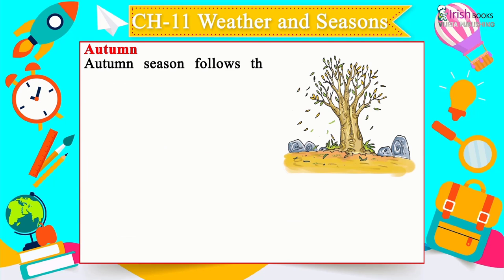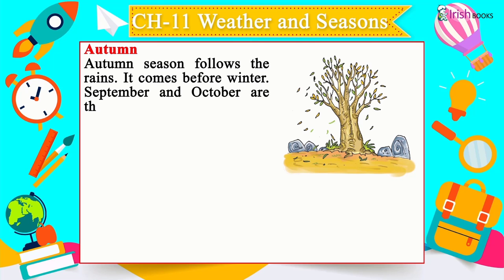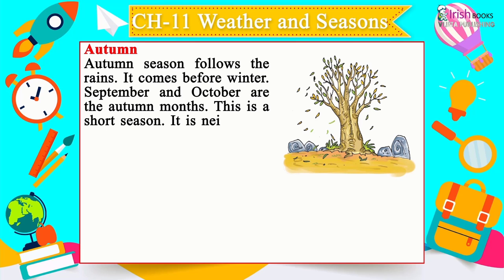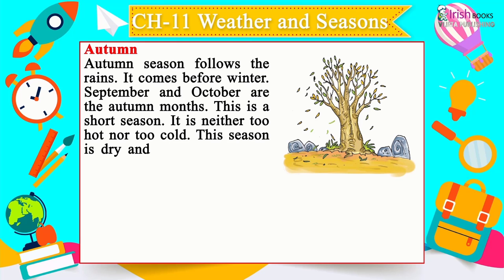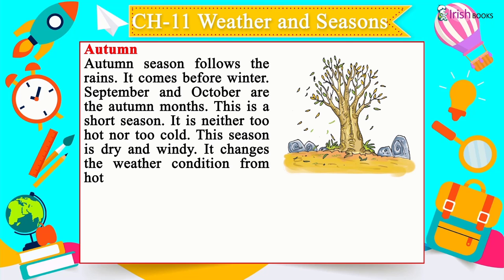Autumn follows the rains and comes before winter. September and October are the autumn months. It is a short season — neither too hot nor too cold, dry and windy. It changes the weather from hot summer to cold winter.